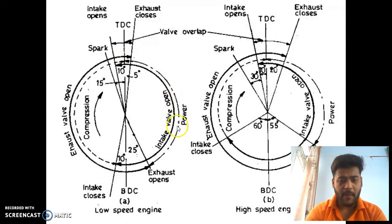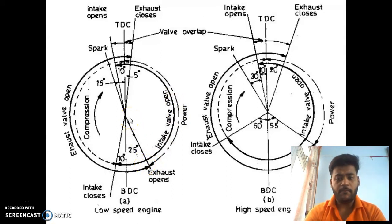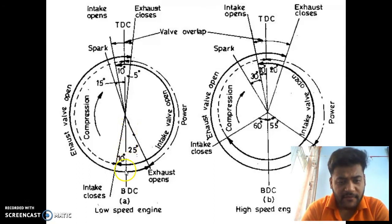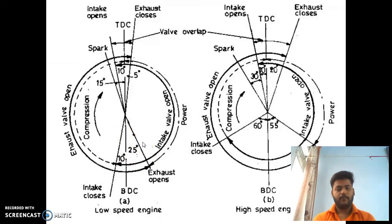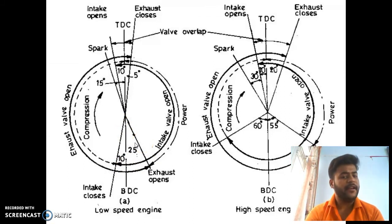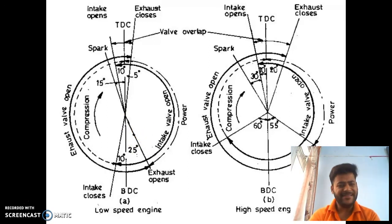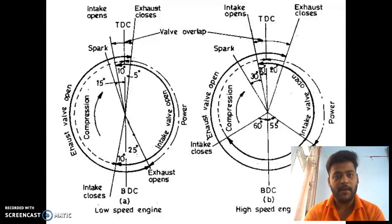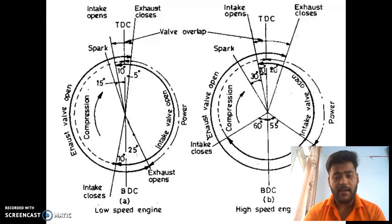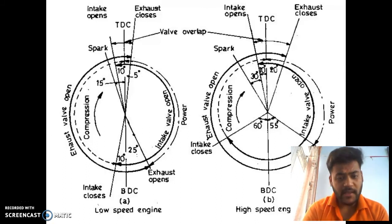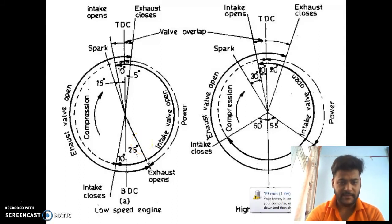At the end of the power stroke we have to open the exhaust valve. We open the exhaust valve before reaching BDC because we want the exhaust valve to be fully opened by the time the piston reaches TDC. For low speed engines it is about 25 degrees and for high speed engines it is as large as 50 degrees. If the exhaust valve didn't open before BDC, the pressure inside the cylinder would be considerably high and the work required to expel the exhaust gases would be very high. So we open the exhaust valve before BDC and then the exhaust process starts.